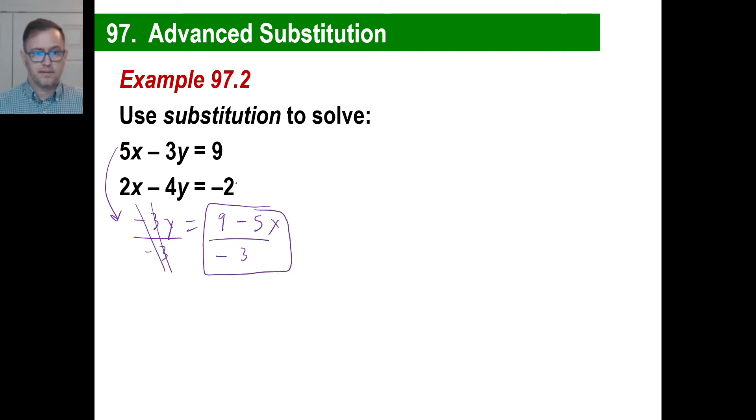Let's go ahead and take this baby right up there, and I have 2X minus 4 times Y, which is 9 minus 5X over negative 3. And that's going to equal negative 2. Well, nothing we can do, but go right through it. So 2X, and then we have negative 4 times 9 is negative 36, and plus 20X over negative 3 equals negative 2. I think I got that right.